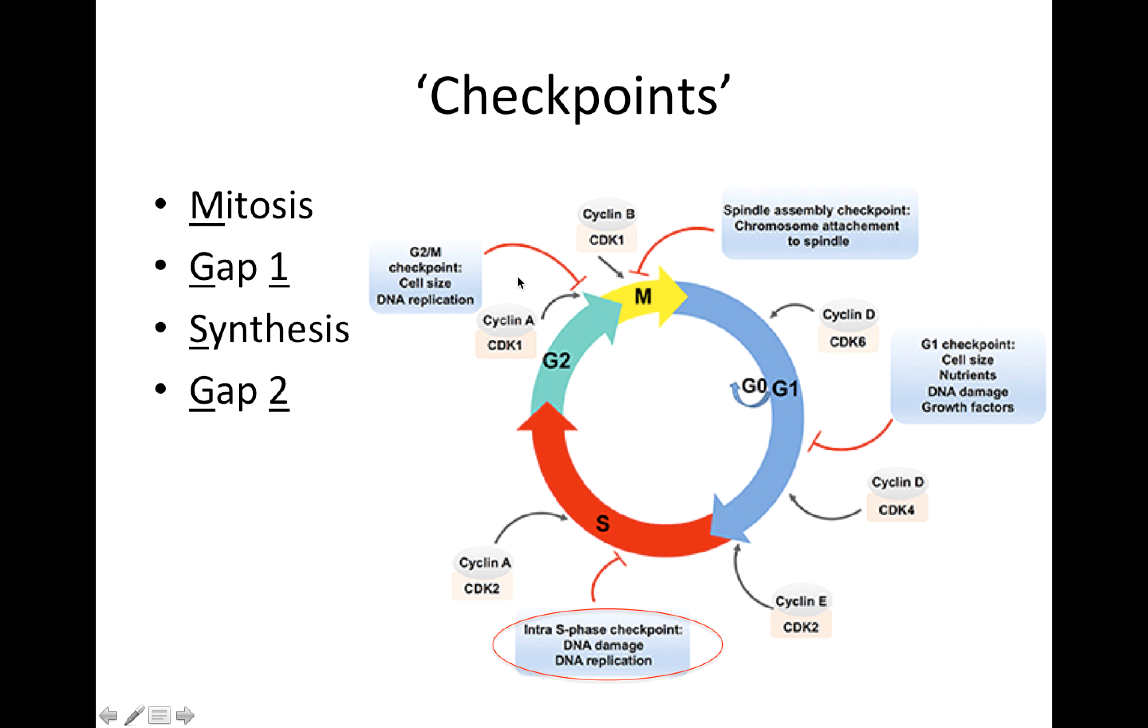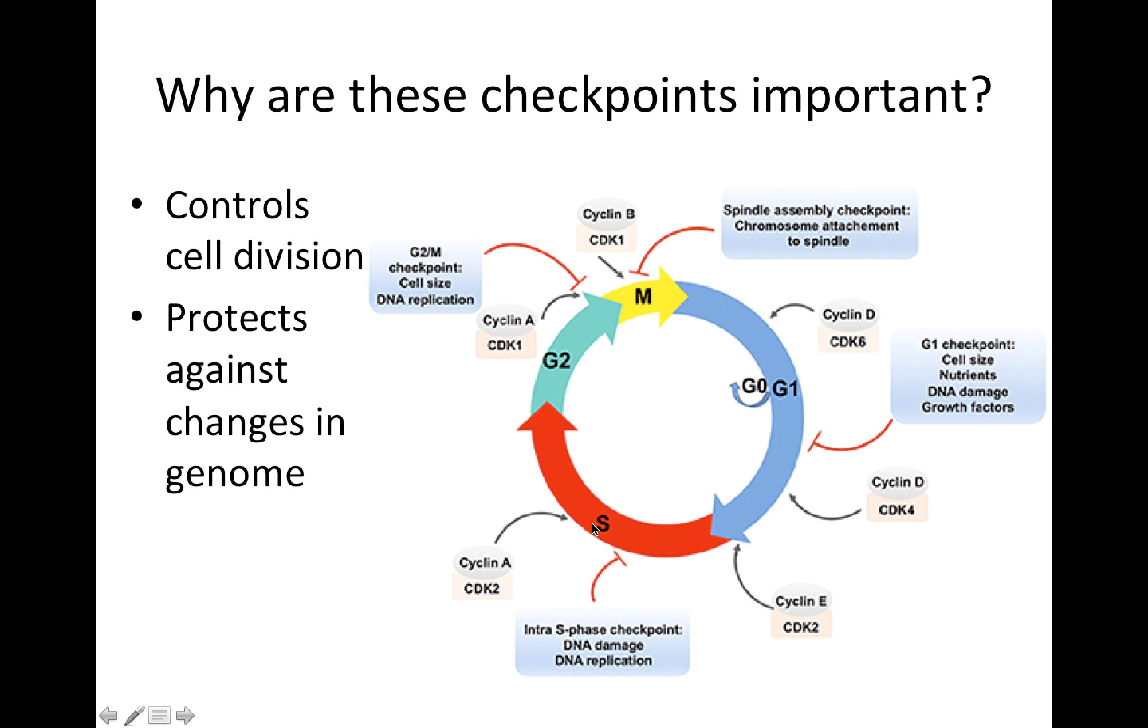And so what all these boxes are showing us are the different checkpoints. And so let's start here with this, the S phase checkpoint. So this one is going to check for DNA damage and replication. So just as we were discussing, to make sure that we don't exit S phase until the job is done. So these are going to help us control cell division and protect against changes in the genome.